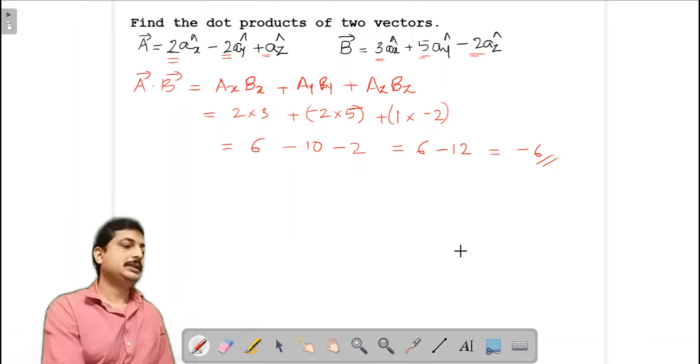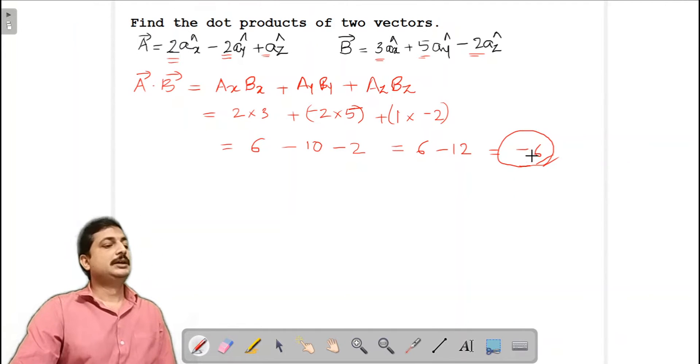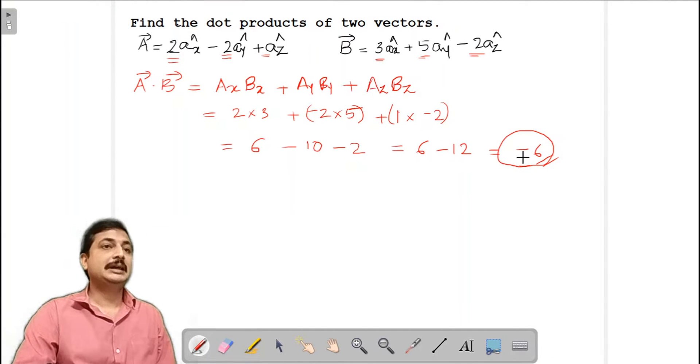This indicates that since it is having a minus sign, this scalar value is lying on the negative side of the plane. If these two vectors are in x, y plane, then your product will be lying on negative side of x, y plane. So that is the meaning.